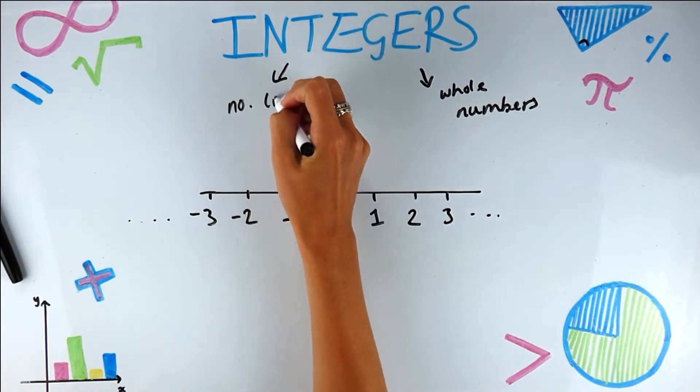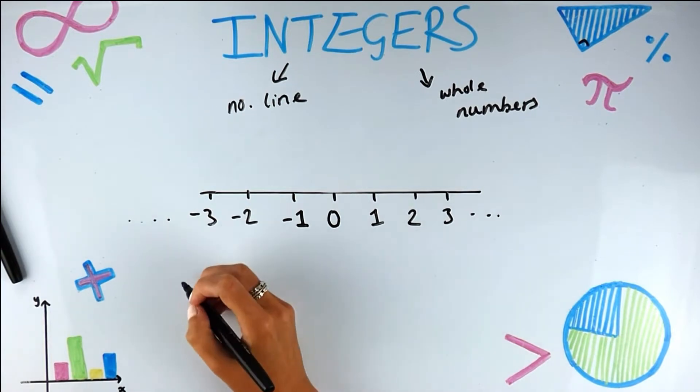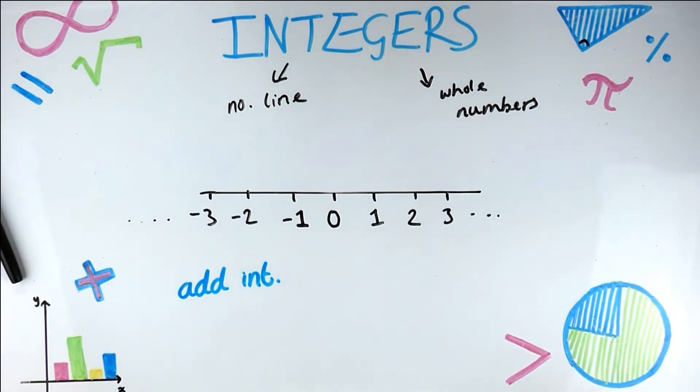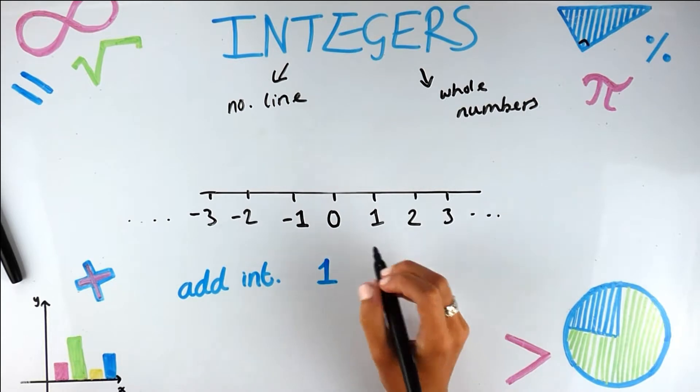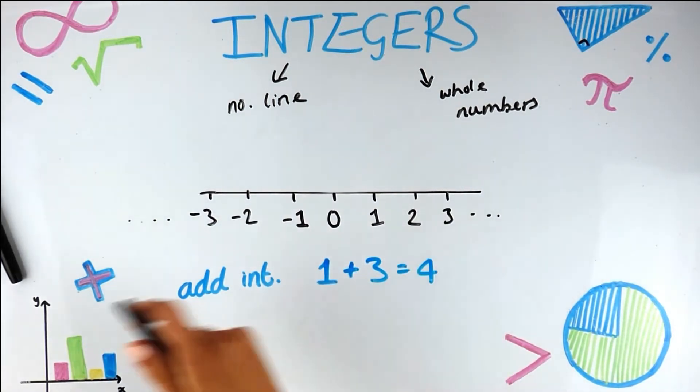Okay, the number line. Simple enough. What happens if we add integers or ints? So let's pick any. I'm going to use one plus three. Both integers equals four.